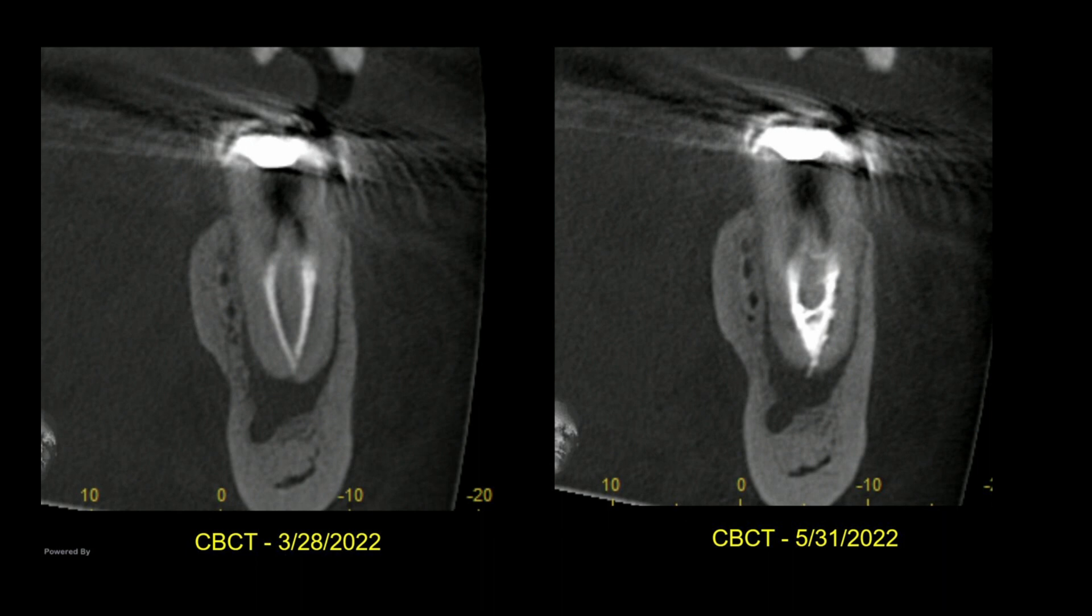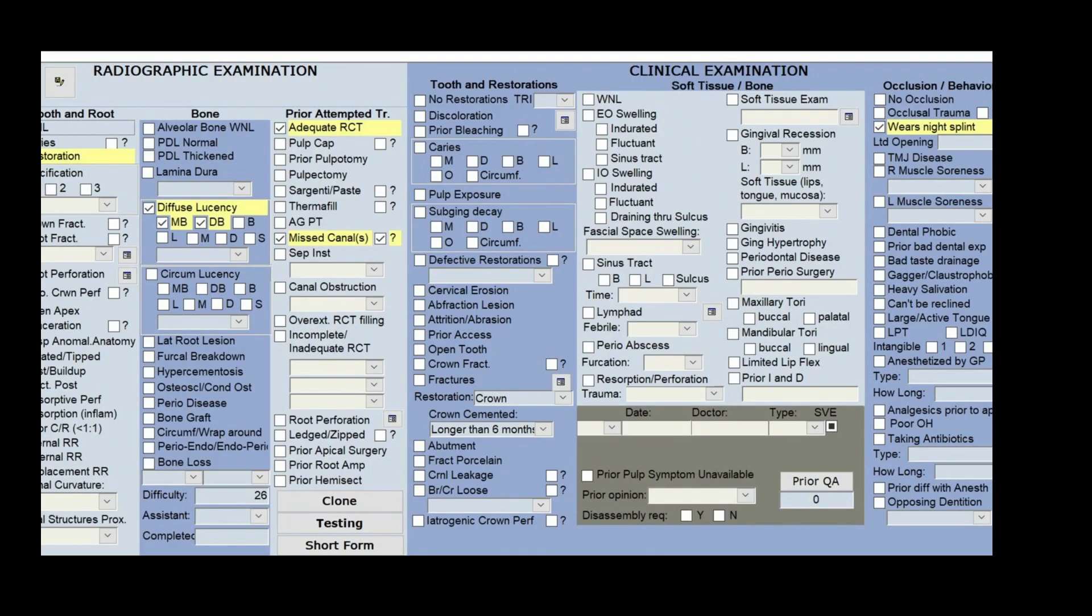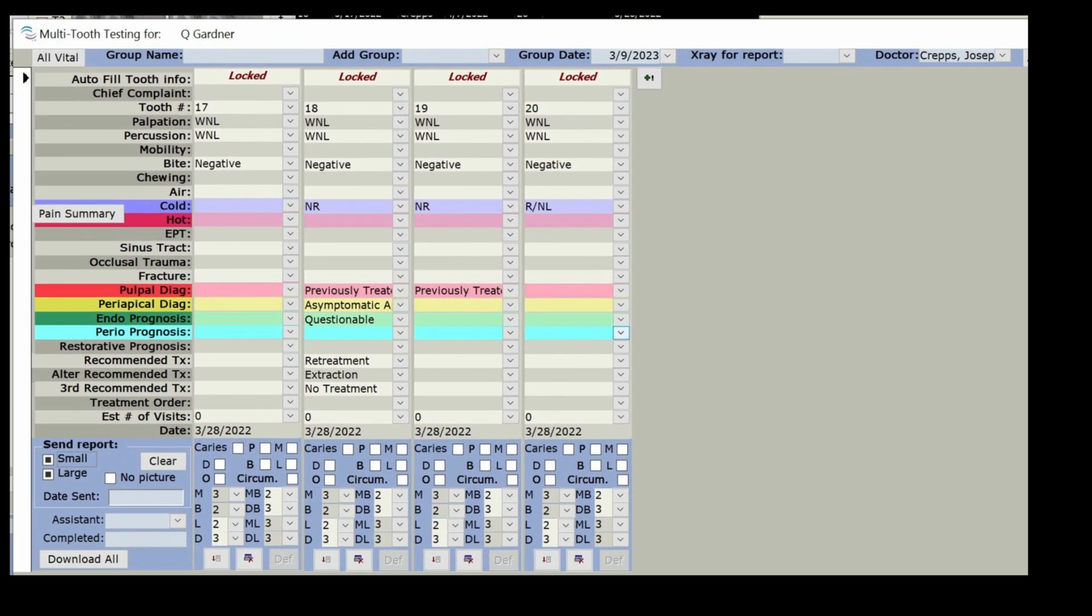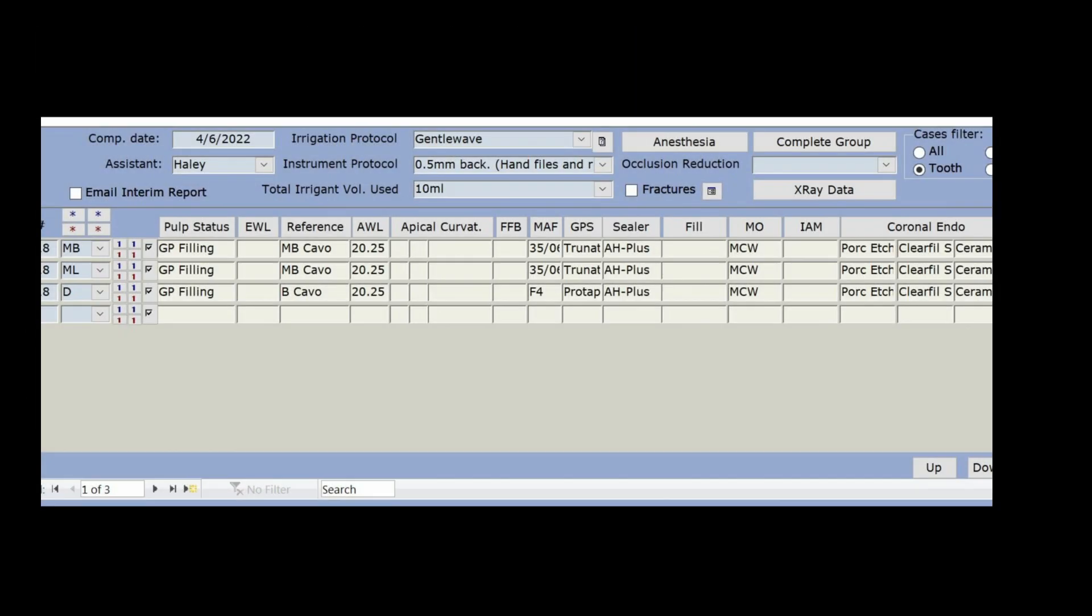So there was some paresthesia in the chin area. These are his pre- and post-op CBCTs, and this is his diagnosis page. There's no record of when the prior treatment was done or who did it. There's some indication of grinding. He wears a night guard, but nothing to indicate occlusal trauma or the muscles of mastication appear to be within normal limits. And these are his testing results. The tooth was asymptomatic other than the feeling of numbness, and the prior filling material was gutta percha.